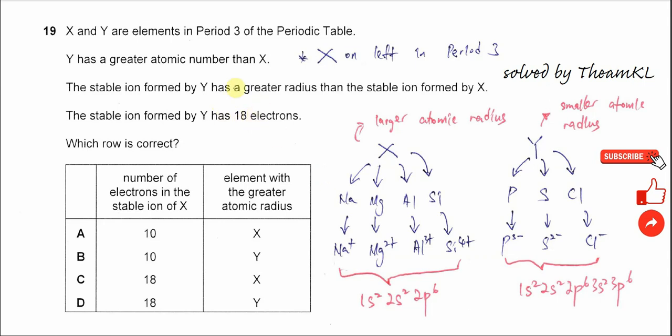Question 19: X and Y are elements in Period 3. Y has a greater atomic number than X. This statement tells us that X is on the left in Period 3 compared to Y, because across the period the atomic number increases. So Y must be on the right-hand side.